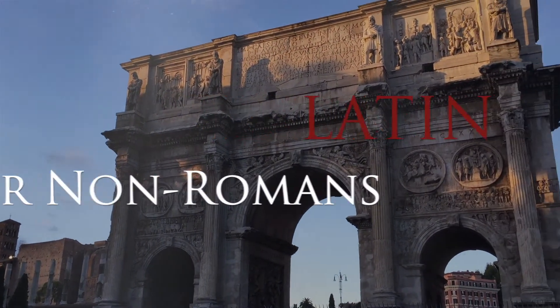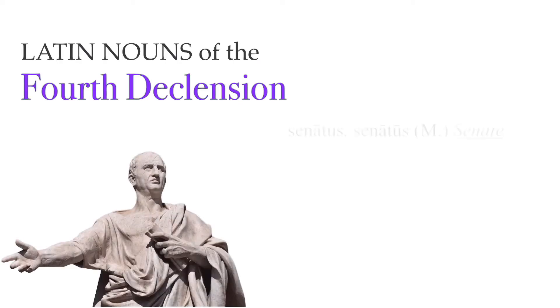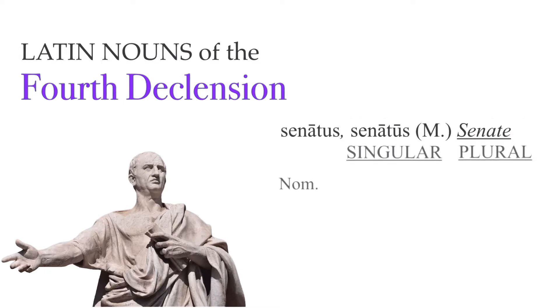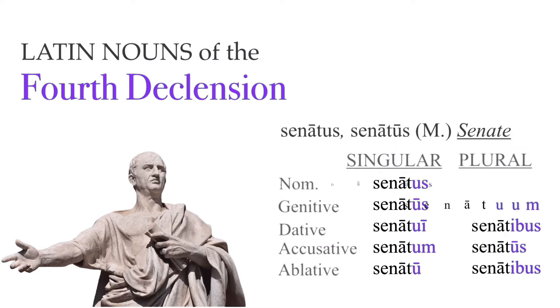Welcome to Latin for Non-Romans, or as I like to call it, Latin for Barbarians. The fourth declension is a relatively small class of nouns, generally masculine. They appear with a characteristic U in most of their endings, and can be identified with 'us' in the genitive singular. Today we will learn how these decline, and tackle a little Cicero while we're at it. But first, let us review.